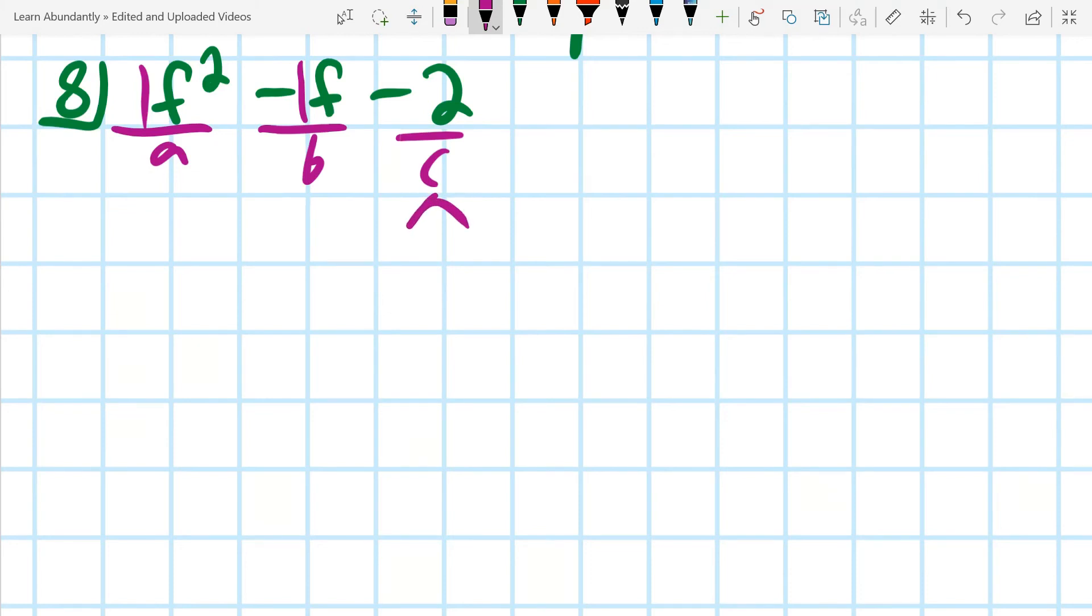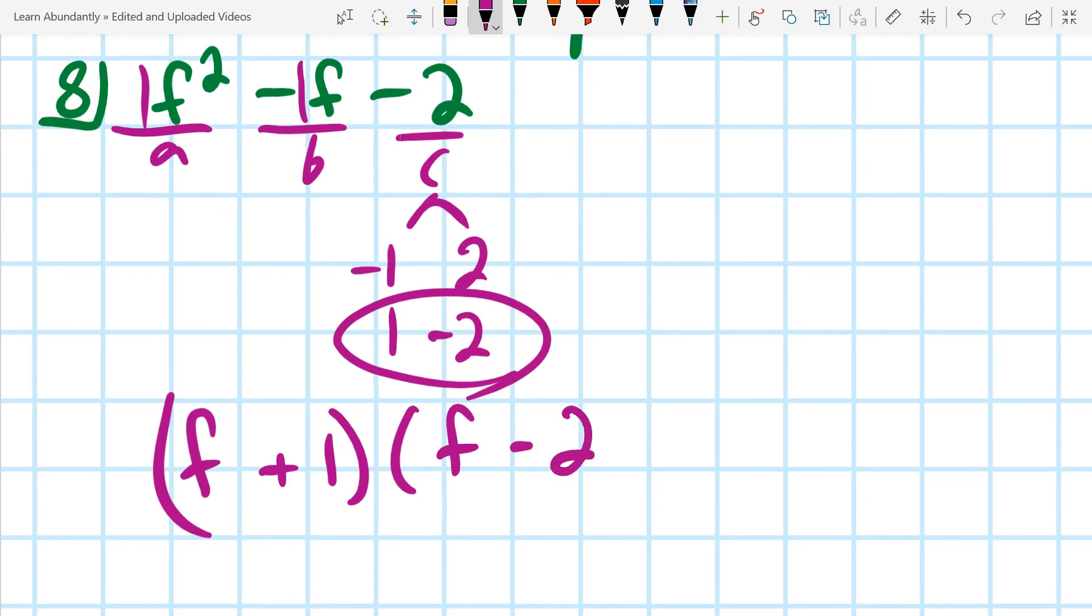Okay, so I need all the numbers that multiply to negative 2. So 1 and 2 are the only two numbers, but it's either 1 and negative 2 or negative 1 and positive 2. Which one adds to give me negative 1? So I can go ahead and write my solution as f plus 1 and f minus 2.